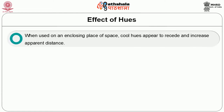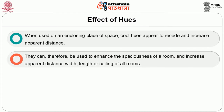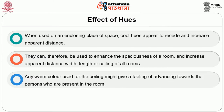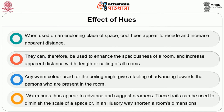When used on an enclosing plane of space, cool hues appear to recede and increase apparent distance. They can therefore be used to enhance the spaciousness of a room and increase apparent distance, width, length, or ceiling height. Any warm color used for the ceiling might give a feeling of advancing towards the persons in the room. Warm hues thus appear to advance and suggest nearness. These traits can be used to diminish the scale of a space or, in an illusory way, shorten a room's dimensions.